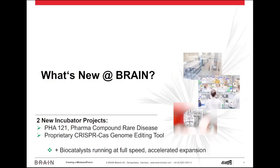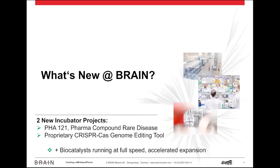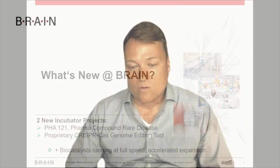I'll just touch about two of the most exciting innovations we have been presenting to the market. First of all, the PH1-121, the pharma compound for rare diseases, and secondly, our proprietary CRISPR-Cas genome editing tool, which really is probably the most exciting development within Brain for the last couple of years.